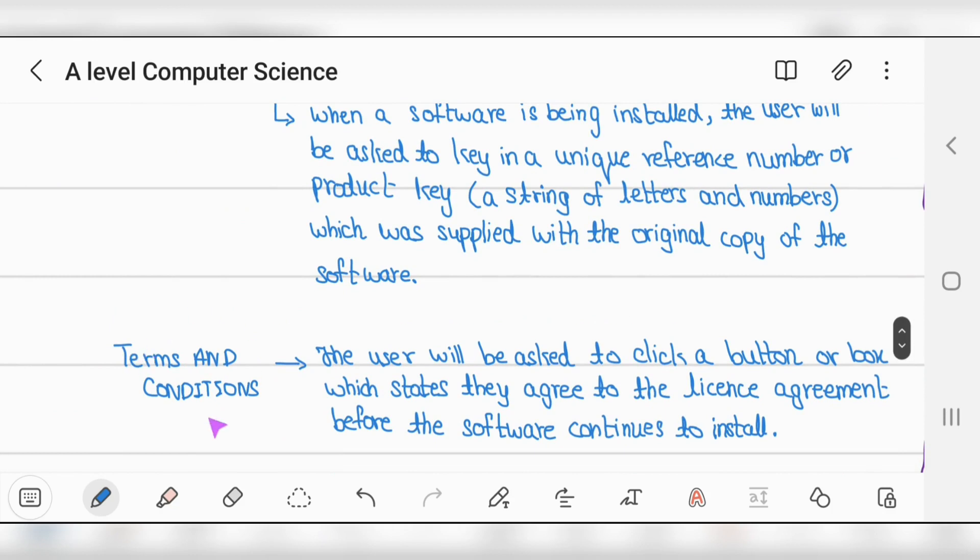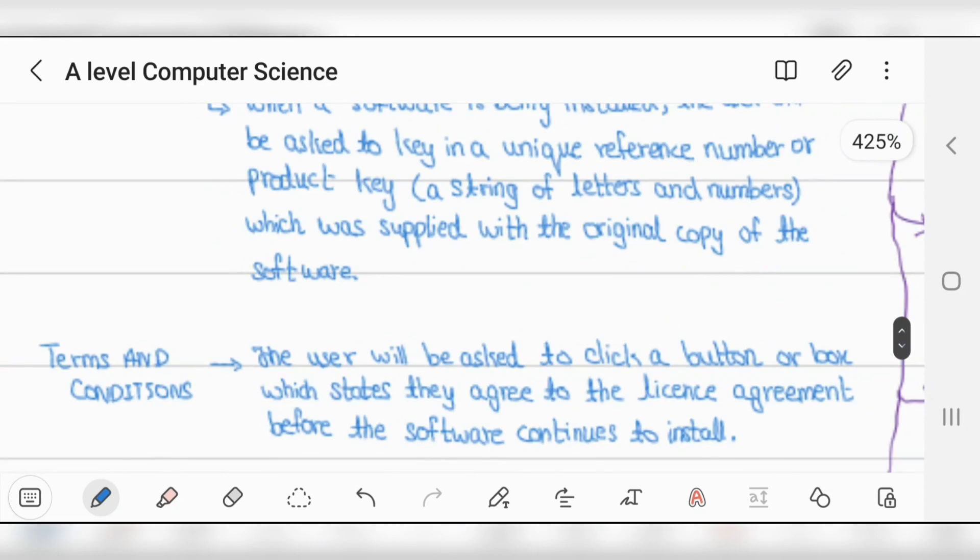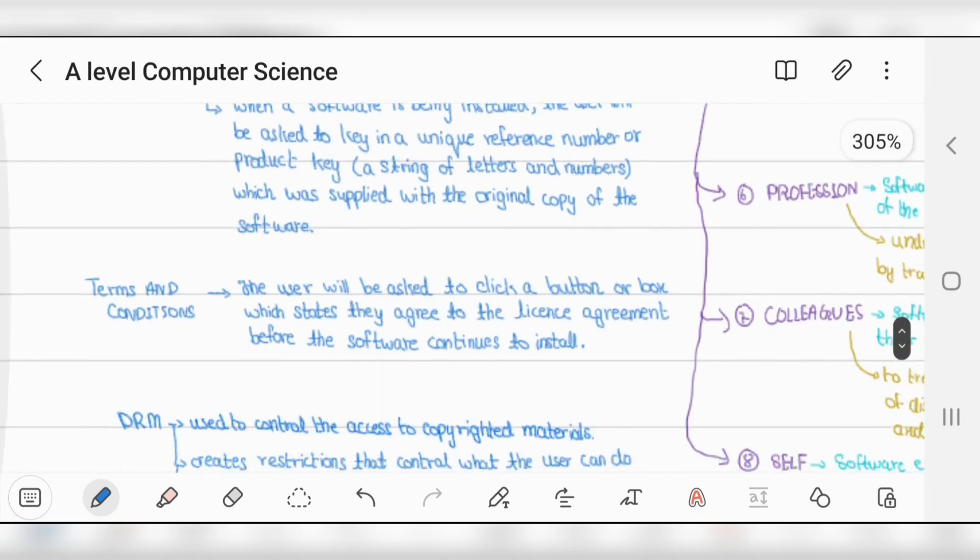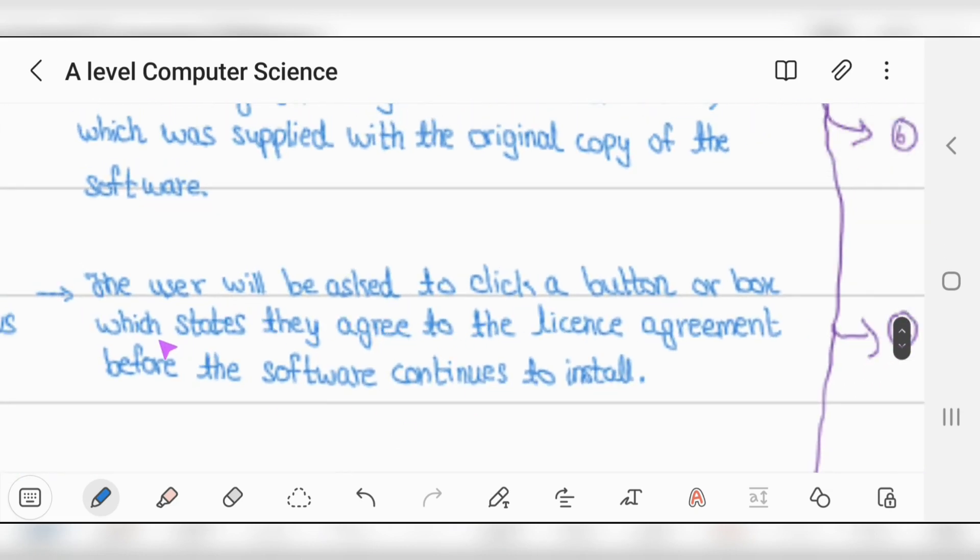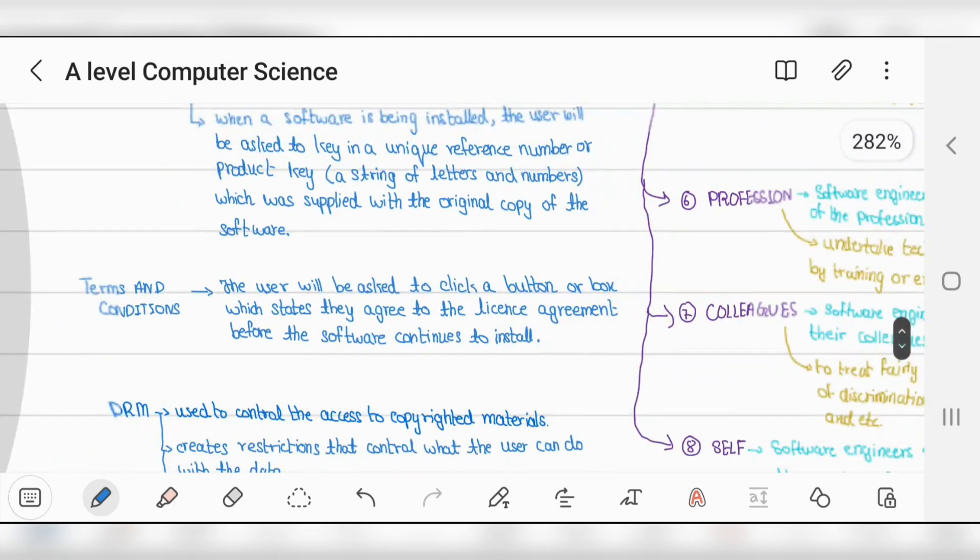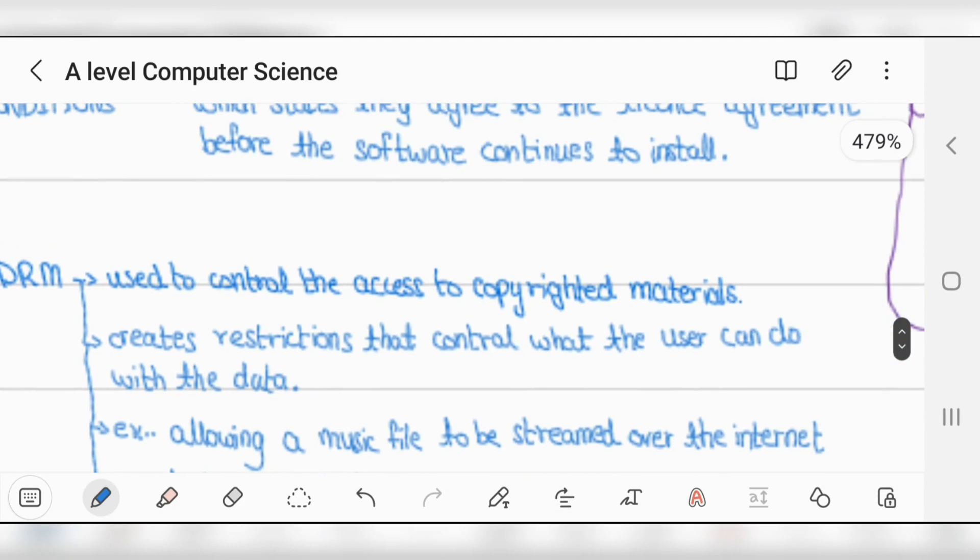Terms and conditions appear when downloading apps - these are ways to secure your work and software. It's one of the best methods for copyright protection. Users are asked to click a button agreeing to the license agreement before software installation continues.